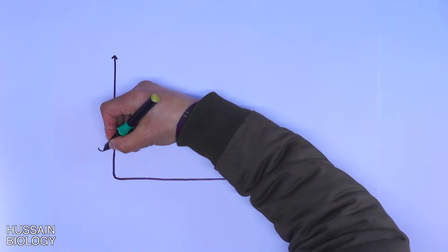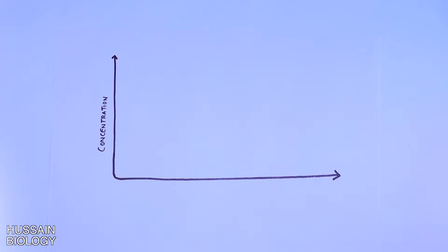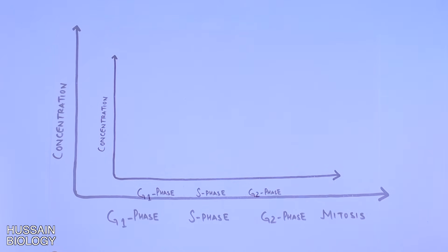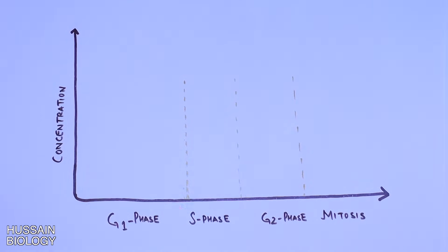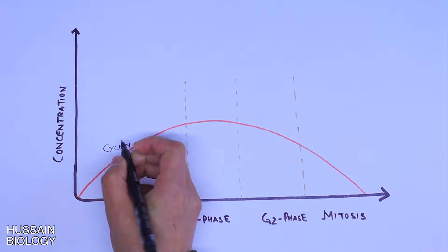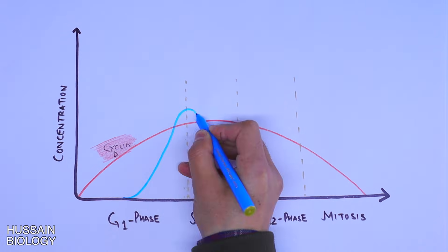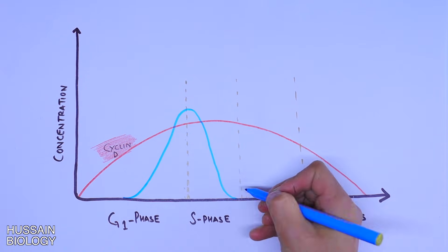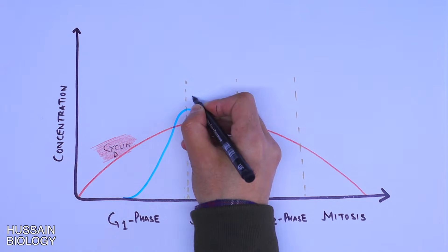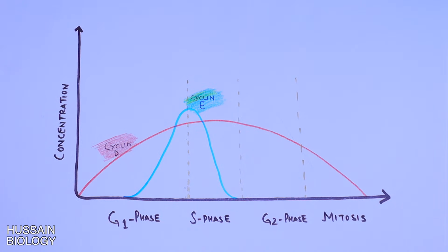Looking at the graph of cyclins across cell cycle phases: cyclin D is present throughout the cell cycle but peaks in late G1 phase and early S phase. Cyclin E peaks at the transition from G1 to S phase and then declines within the S phase.